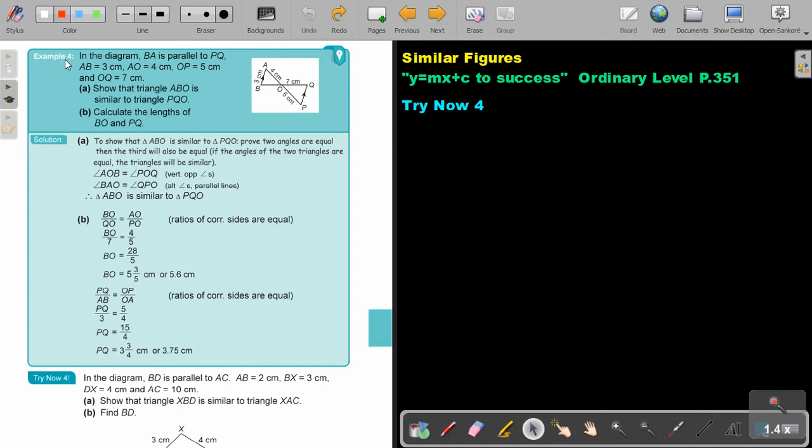Let's look at example 4. In the diagram, BA is parallel to PQ. AB is 3, AO is 4, OP is 5, and OQ is 7 cm. Show that triangle ABO is similar to triangle PQO.